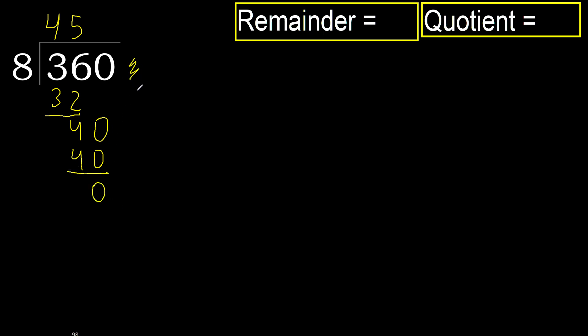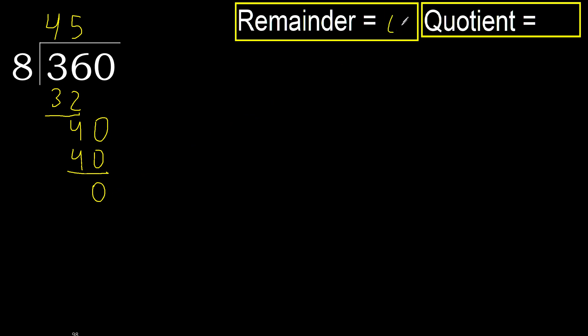There is no next number, therefore we finish. 360 divided by 8 is 45.